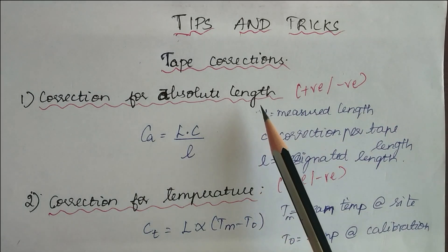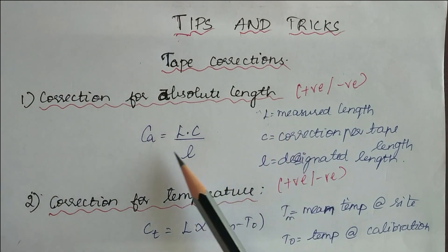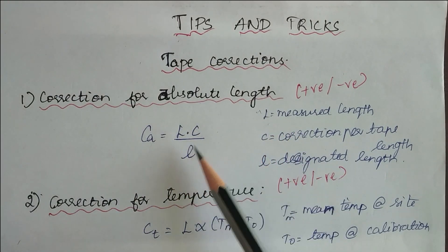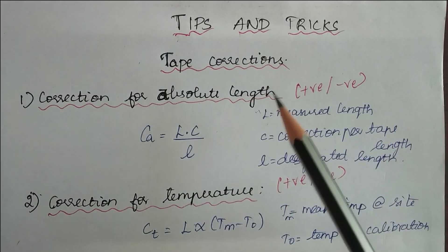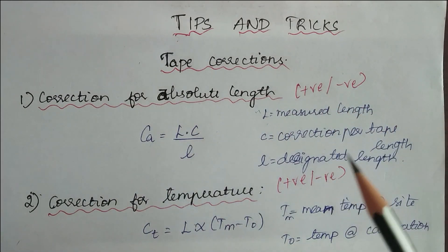So first is correction for absolute length. The formula for the correction is L times C divided by l, where L is the measured length, C is the correction per tape length, and l is the designated length. The correction can be positive or negative depending upon the condition.